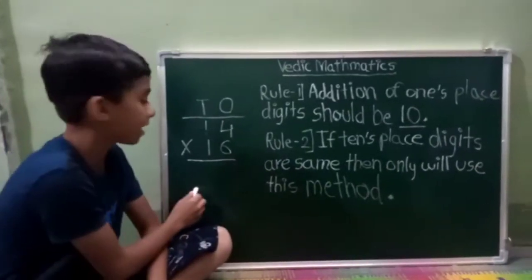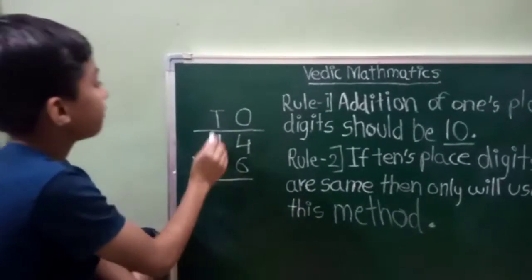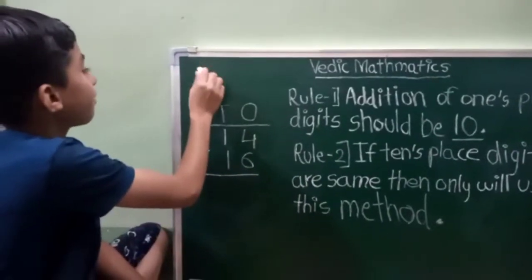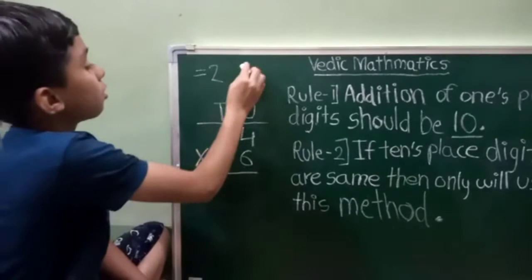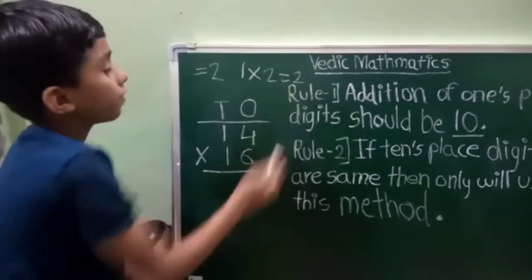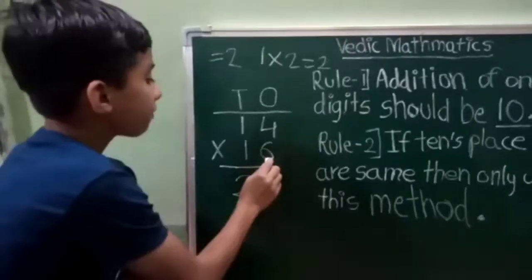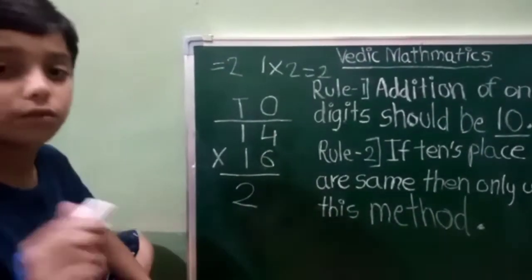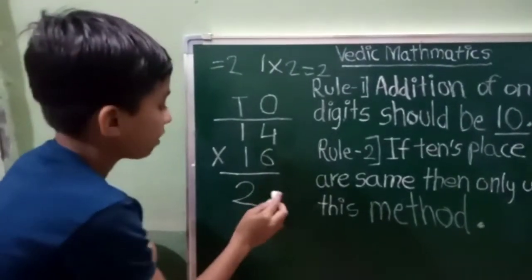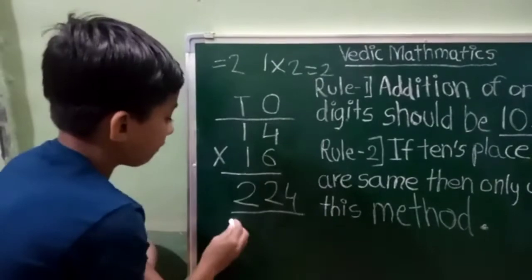See this example, we will solve this in Vedic method. See this 1, we have to find successor of 1 is equal to 2. So 1 into 2 is equal to 2. So we have to write this 2 downside here. 6 4s are 24. So we have to write 24 here. See, this is the final answer.